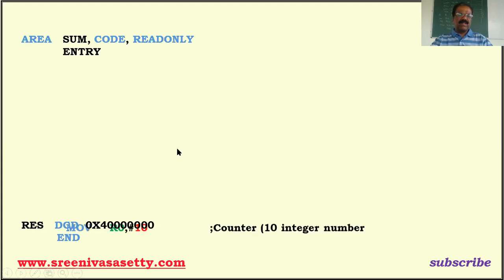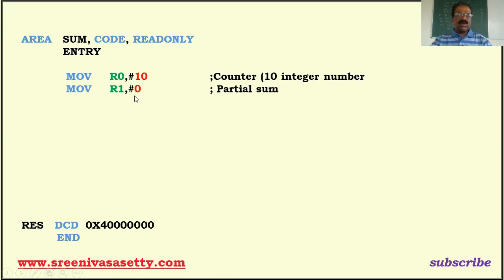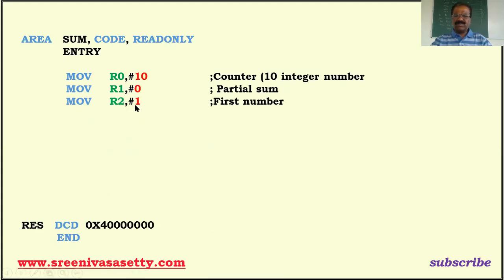MOV R0, comma 10 — this sets the counter to 10, because we have 10 numbers from 1 to 10. MOV R1, comma 0 — this loads the immediate value zero into R1. R1 is a 32-bit register used for the partial sum; the initial sum must be zero. Then MOV R2, comma 1 — R2 holds the first number, since we start with 1.